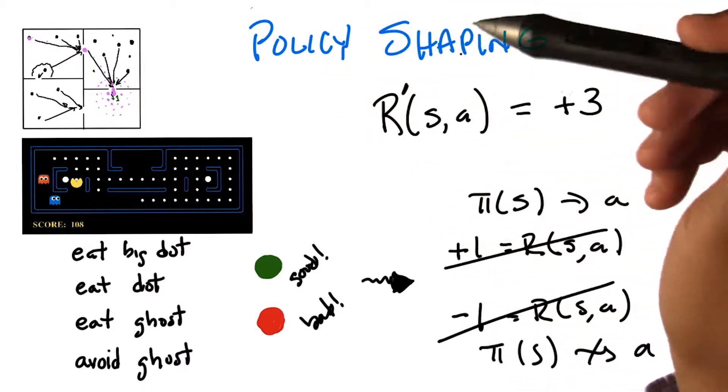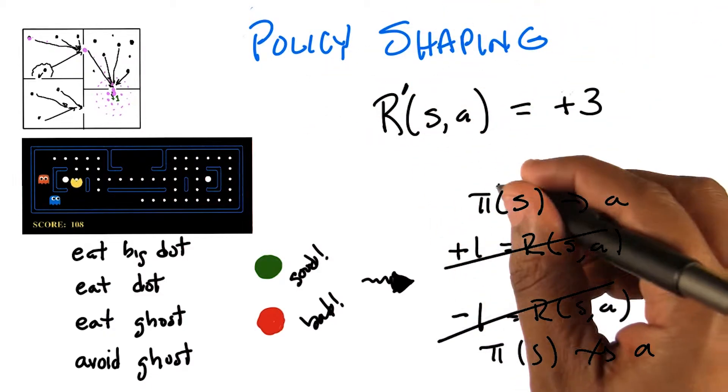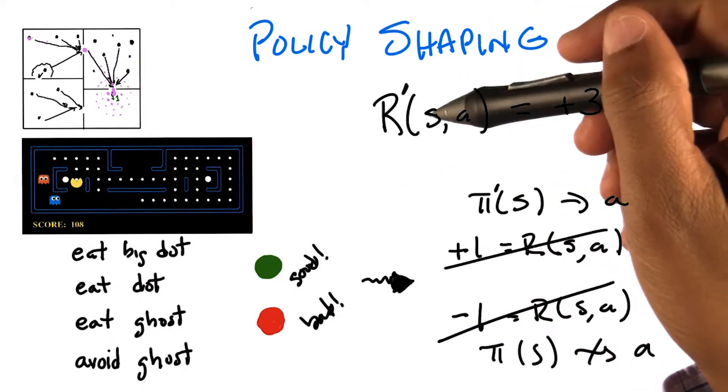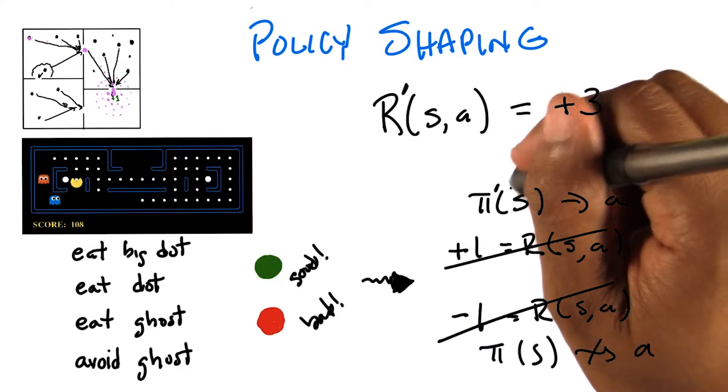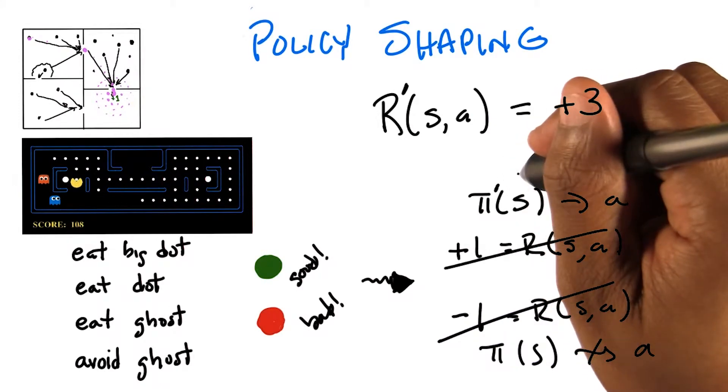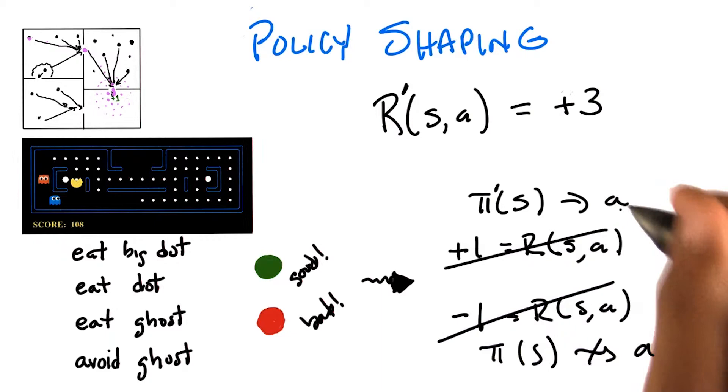So in exactly the same way, policy shaping is about changing the policy. There's some policy that the agent currently has, and you're saying, actually in this state, rather than whatever it was you think you should do, you should do, in fact, this.